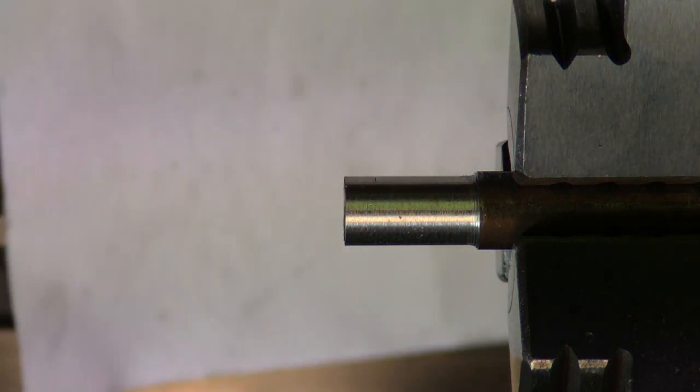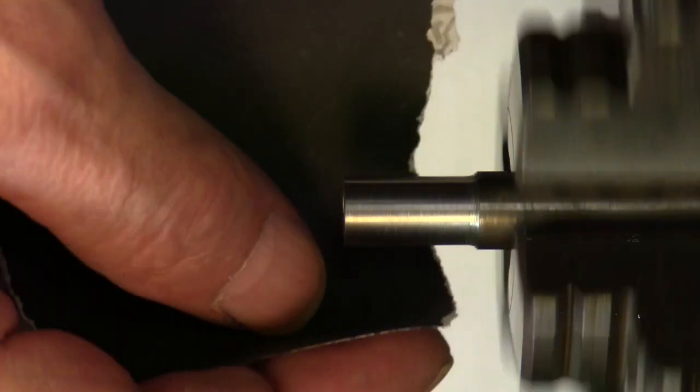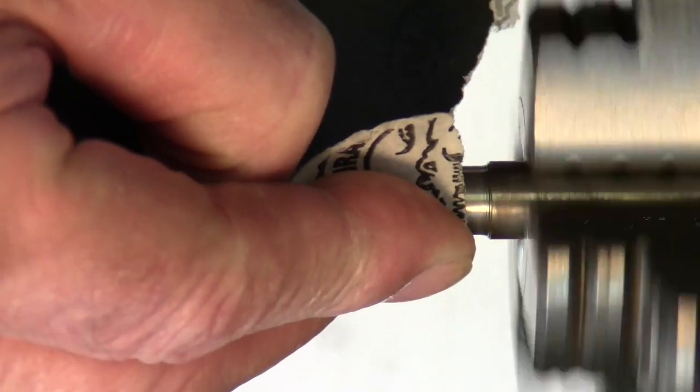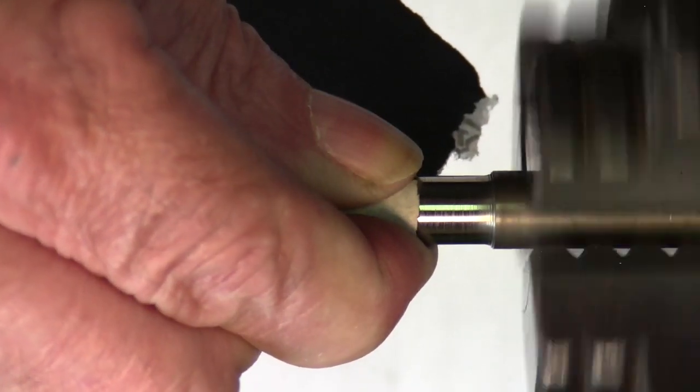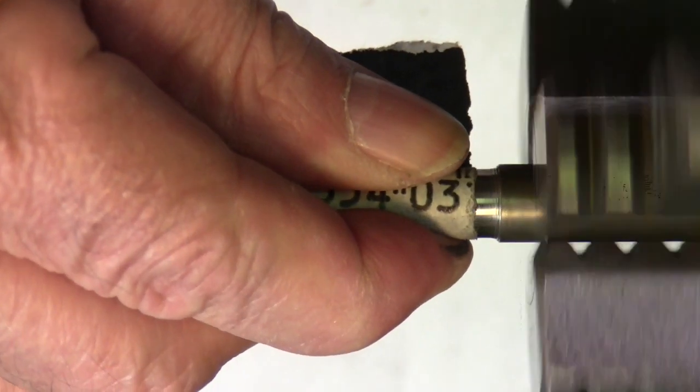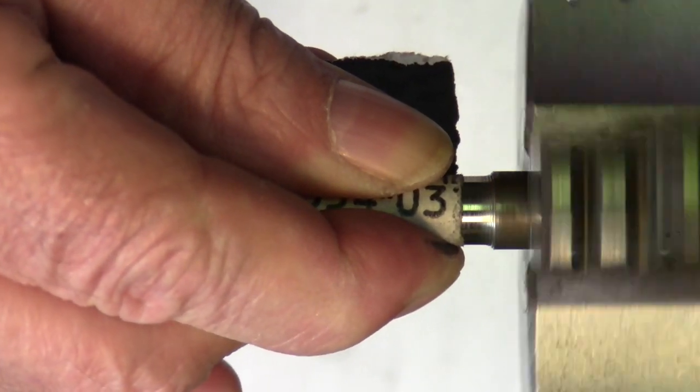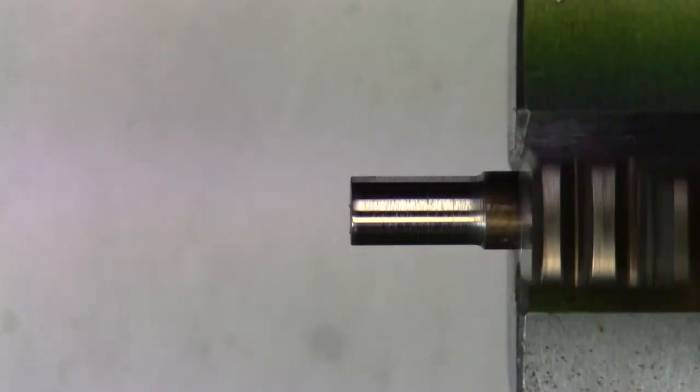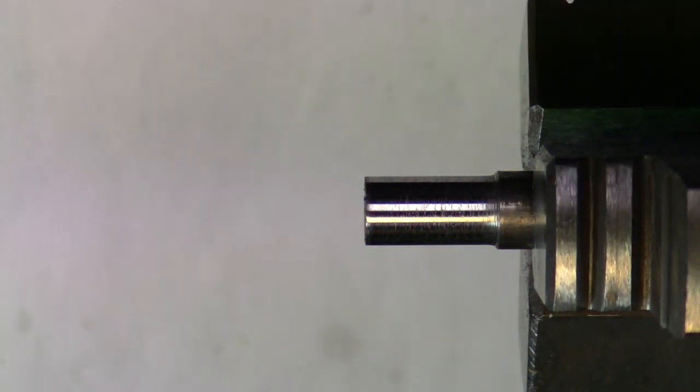Get some 600 grit here and polish it. I hate using sandpaper on a lathe so I put something up to catch the dust because I don't want it rusty.